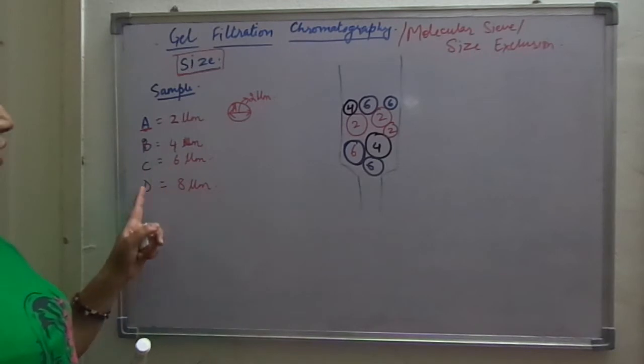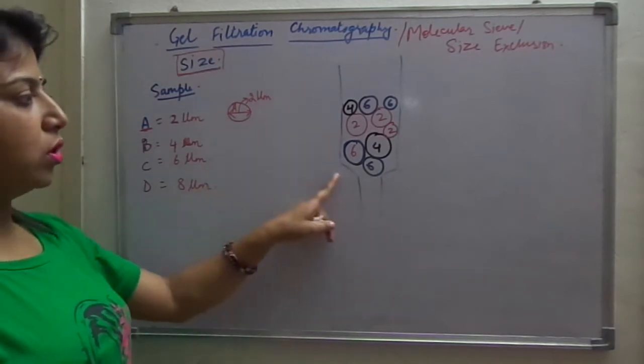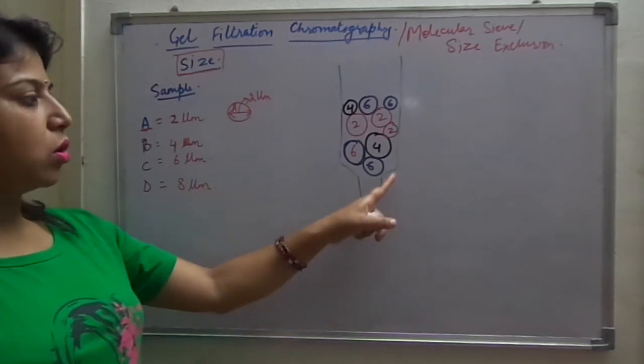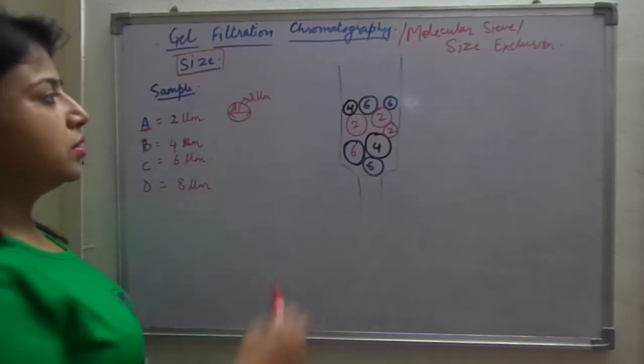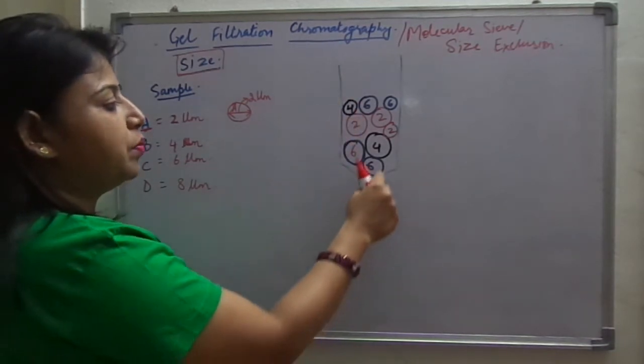For chromatography, for any kind of column chromatography, first of all, you need a column and this column should always be made of glass. In this column, you need to fill beads.